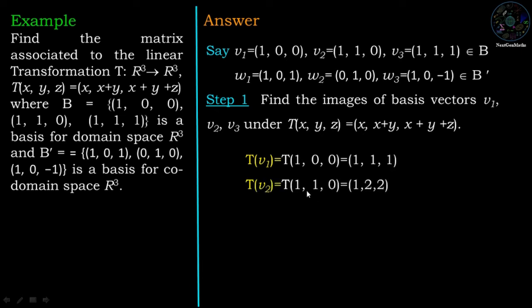Tv2 = T(1,1,0): with x=1, y=1, z=0, the first coordinate is 1, the second coordinate is 1+1 = 2, and the third coordinate is 1+1+0 = 2. So Tv2 = (1,2,2).